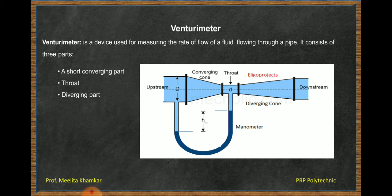The first application is venturimeter. The venturimeter is used for flow measurement when the flow is flowing through the pipe. It consists of three main parts. One is short convergent cone, second is throat, and third is divergent cone.